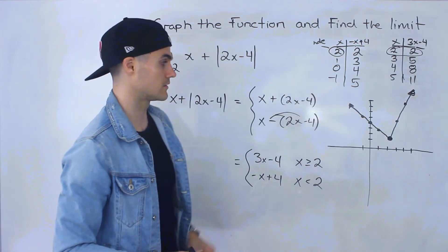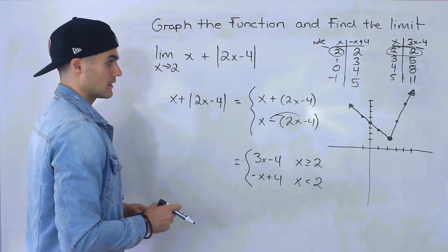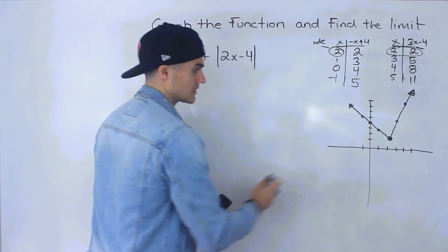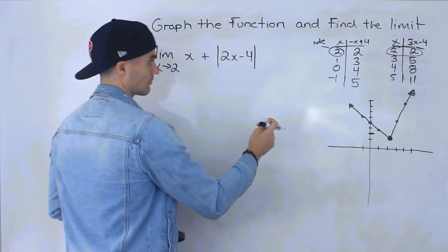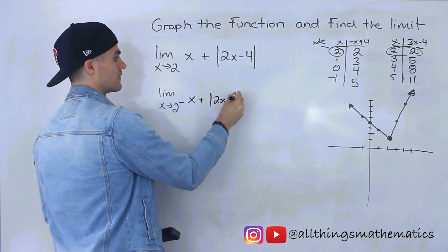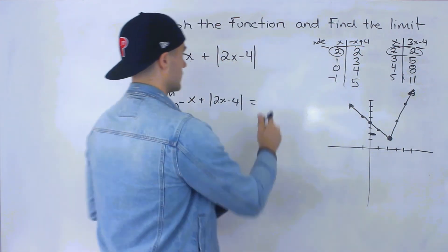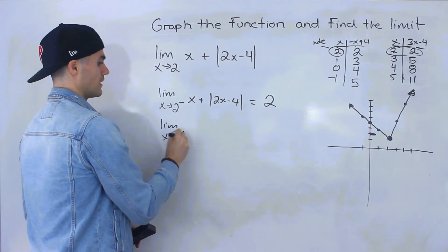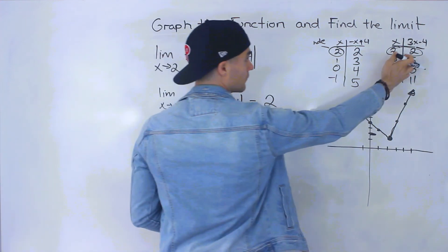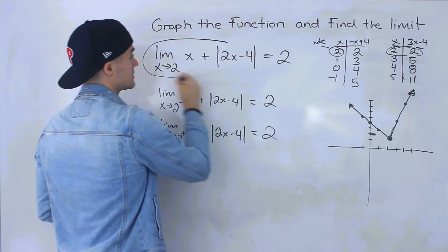If you plug this into a calculator you should get something like that — same as this piecewise function. Remember, this function and the piecewise form are the exact same thing. Now we can solve the limit. The limit as x approaches 2 from the negative side is approaching that y value of 2. The limit as x approaches 2 from the positive side is also approaching that y value of 2. Since it approaches the same y value from both sides, the overall limit equals 2.